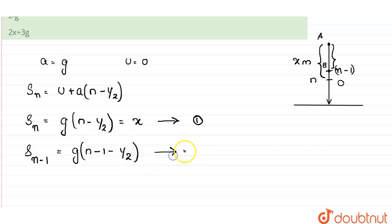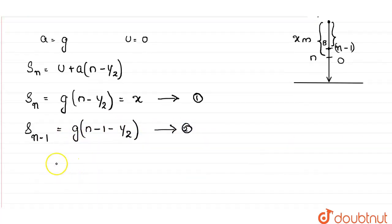So this is our second equation. Now the second equation can be modified a bit. So we have taken n minus half as one term and minus 1 as another term and then multiply the two different terms with g.